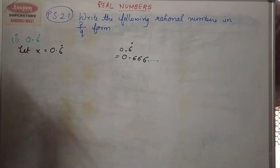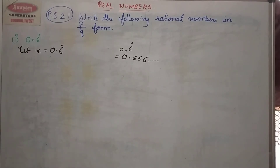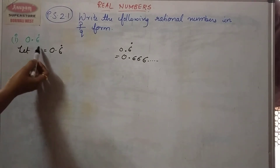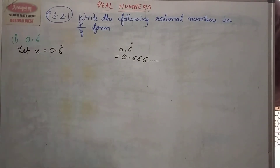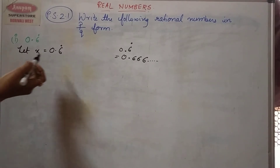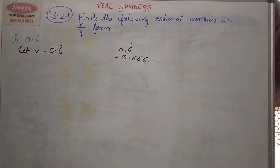The next step is multiplying x either by 10, 100, 1000, and so on. We decide this by looking at the number of digits after the decimal point. In this case, there is only one digit after the decimal point — only one digit has been repeated — and therefore we multiply by 10. The number of digits after the decimal point equals the number of zeros.